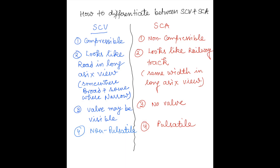To differentiate between the subclavian vein and subclavian artery in long axis view: the subclavian vein is compressible and the subclavian artery is non-compressible. The subclavian vein looks like a road — broader in some areas and narrower in others — whereas the subclavian artery looks like a railway track, with the same width all the way through. The vein wall may be visible, while there is no visible wall in the artery. There is no pulsation in the subclavian vein, while the subclavian artery will always be pulsatile.